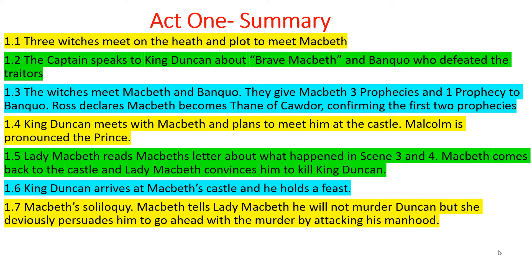Act 1, Scene 6 begins as King Duncan arrives at Macbeth's castle and holds a feast. He speaks to his noblemen and gives a heartfelt, heartwarming speech, laying out plans for the future. Here Macbeth feels loyalty to his king and says he doesn't want to go through with the plan — he doesn't want to kill him.